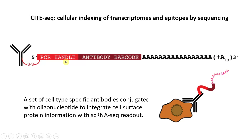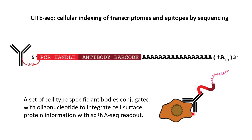The short oligonucleotide sequence includes a PCR handle for sequence amplification and an antibody barcode. If we see this barcode information in the sequencing data, we know this cell expressed a surface protein that can be recognized by this antibody. Following the incubation, the antibodies will bind to the proteins localizing on the cell surface.